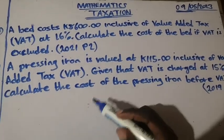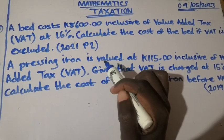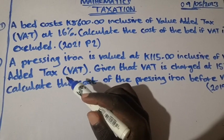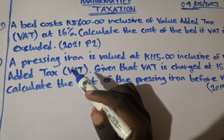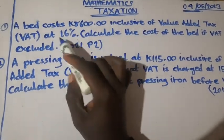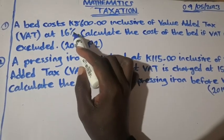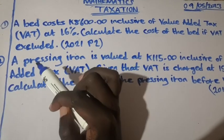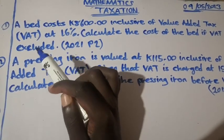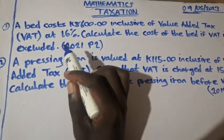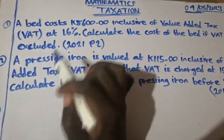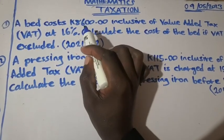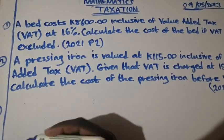This question is under taxation and it came in 2021, Paper 2. To answer this question, we have to first calculate 16% of this amount, so that we can subtract it from 8,600, since VAT should be excluded. Here it is included, so now we have to remove it. Let's calculate 16%.